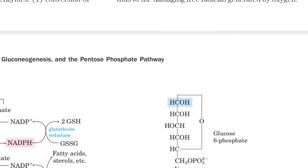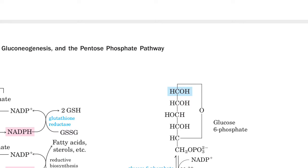Hello friends, welcome to BSc Semester 3 video lectures. In this lecture we will discuss cellular metabolism, biotechnology paper 3, unit 4, topic: Pentose Phosphate Pathway (PPP). Another name of this pathway is Hexose Monophosphate Shunt (HMS).